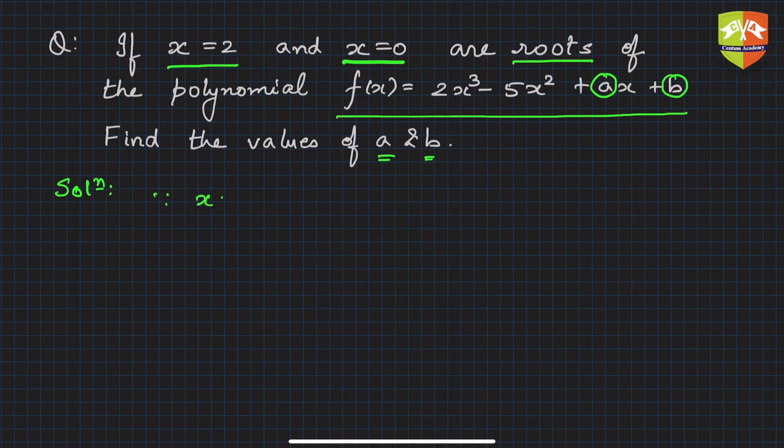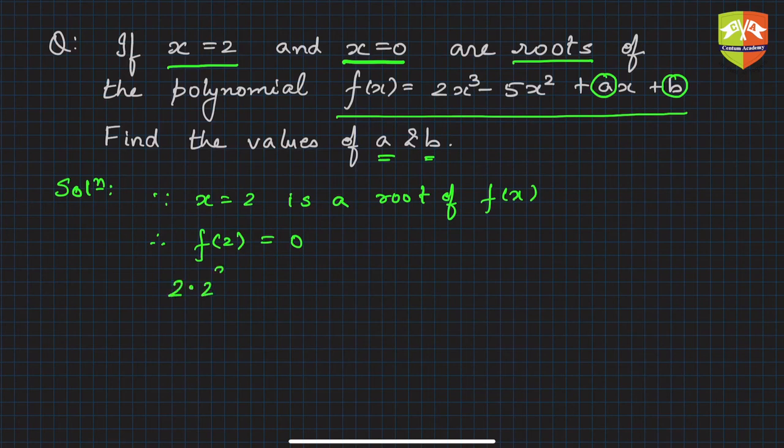Since x equals 2 is a zero or root of f(x), therefore by definition we know f(2), that is f of 2, is 0. So what is f of 2? 2 times 2 cubed, so replace x by 2 everywhere, minus 5 times 2 squared plus a times 2 plus b.